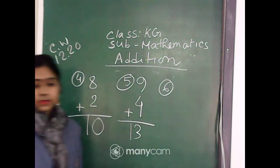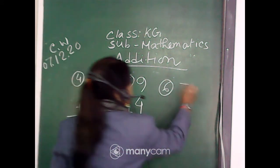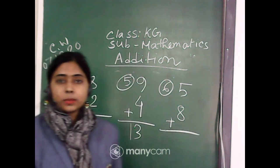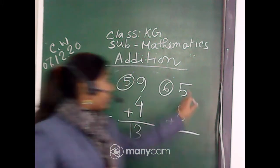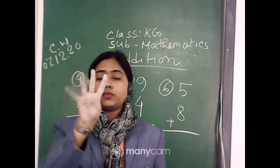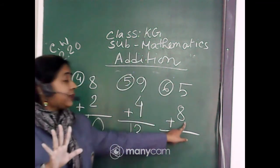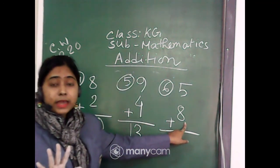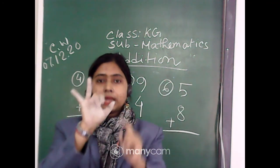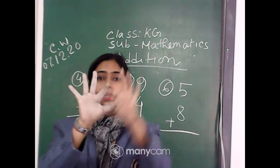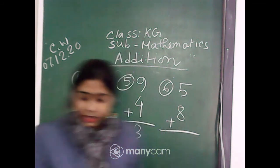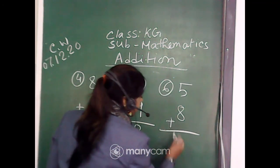And the last one, number 6: 5 plus 8. Which one is the small number? 5. I am showing with my right hand 5 fingers: 1, 2, 3, 4, 5. Then the other number is 8 — the big number is 8. So, 8 after 5 fingers: 9, 10, 11, 12, 13. So, 5 plus 8 is equal to 13.